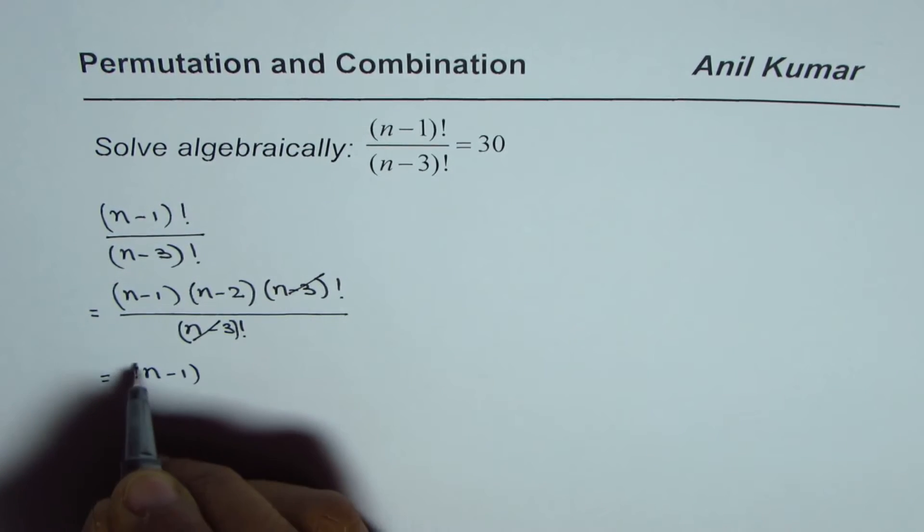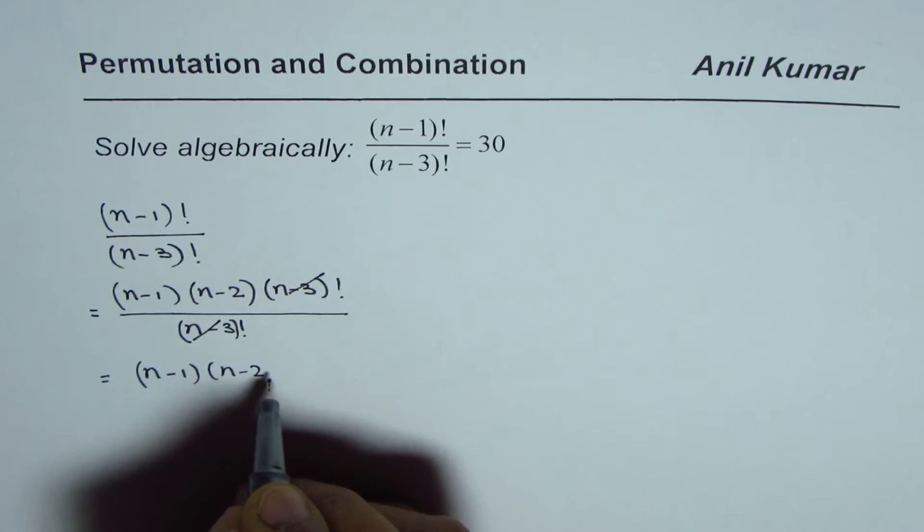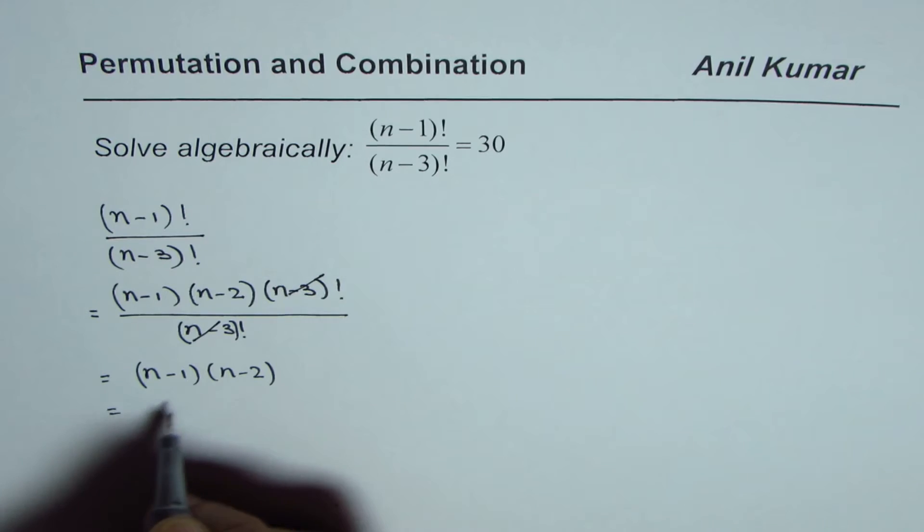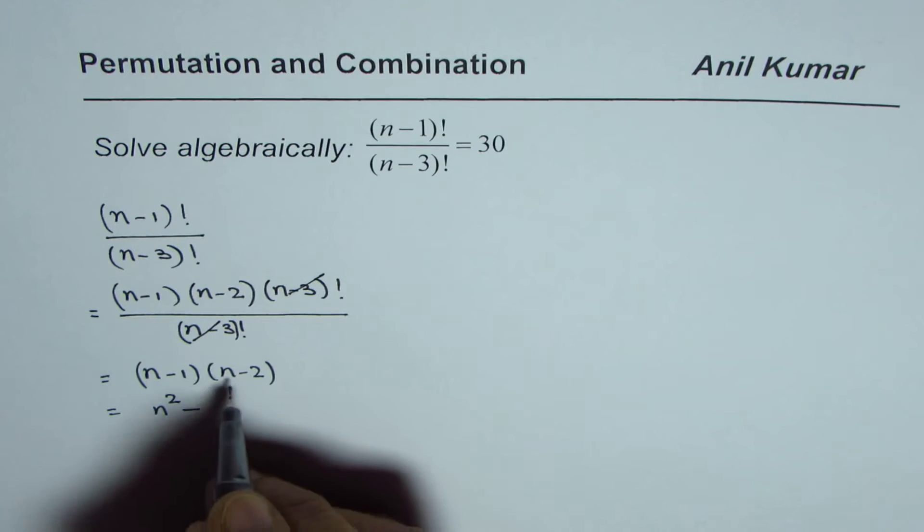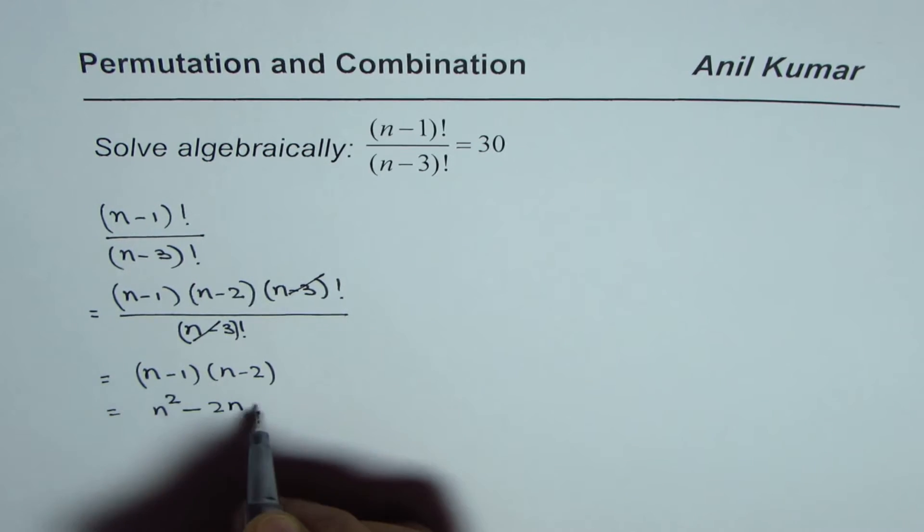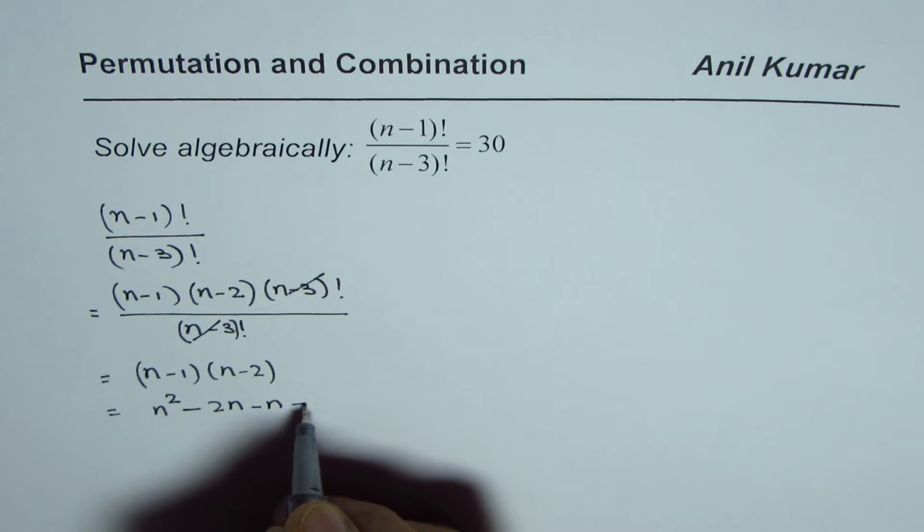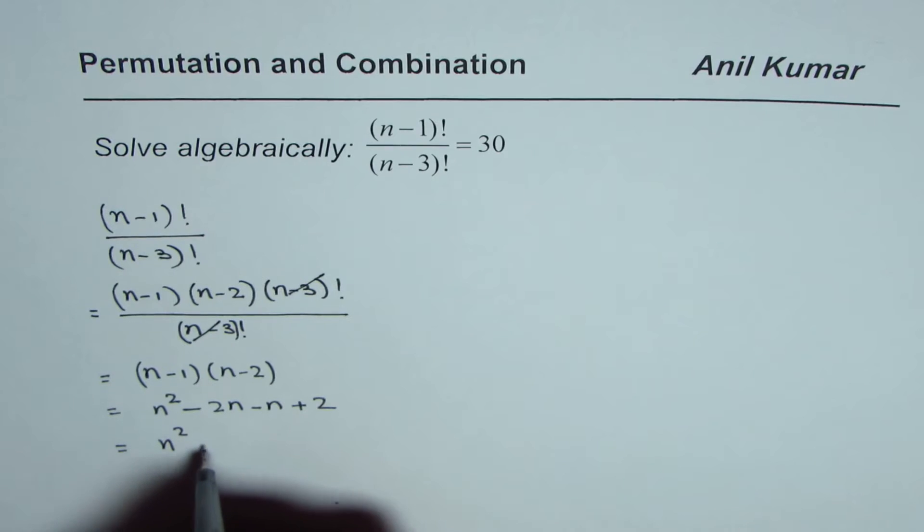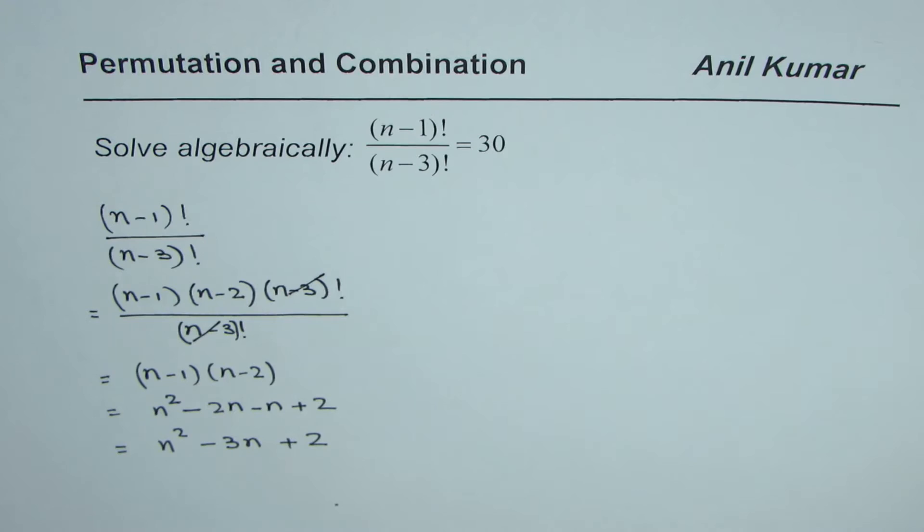You can expand this, so you get n² minus 2n minus n plus 2, which equals n² minus 3n plus 2. That is how you could simplify the left-hand side.